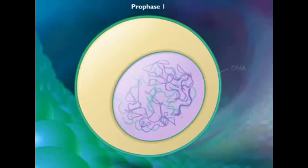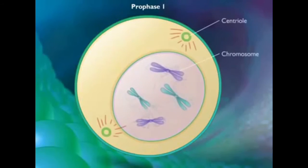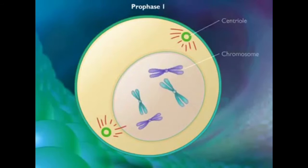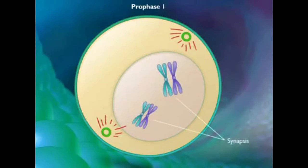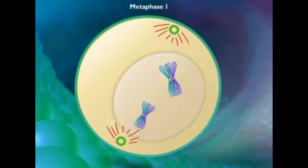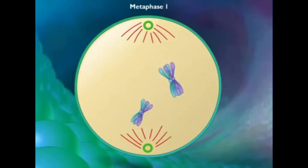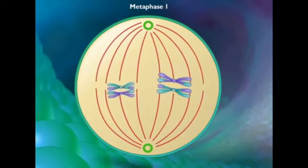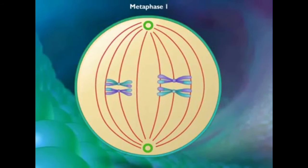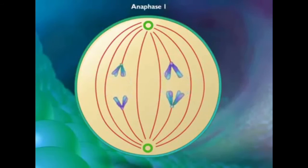Much like in mitosis, in the first stage of meiosis called meiosis I, all of the chromosomes are copied. All the chromosomes then pair up in each of their homologous pairs. Homologous means that each chromosome has alleles of the same gene in the same loci in both chromosomes. Then, members of each homologous pair separate.